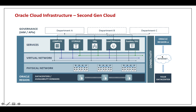To summarize the second-gen cloud architecture: connectivity starts with either the public internet or FastConnect. Inside the Oracle region, we have Data Regions, then the physical network, then the virtual network via off-box virtualization, then the services layer on top. The whole architecture is controlled by a governance model using IAM services, APIs, and compartments to organize and isolate cloud resources. That completes the architecture of second-gen cloud.